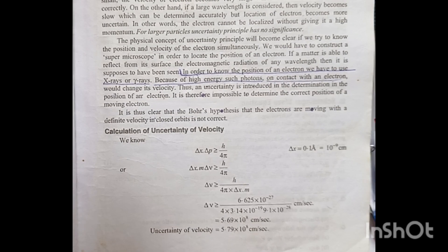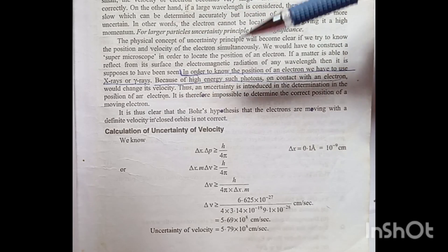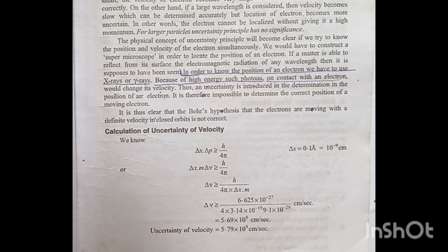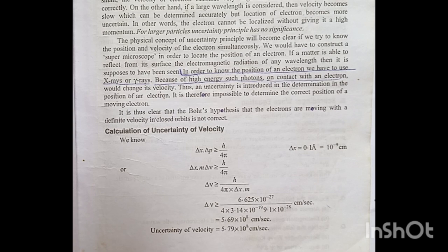If we need to know the position and velocity of an electron simultaneously, we need a super microscope to locate the position of an electron. If a matter is able to reflect electromagnetic radiation of any wavelength from its surface, it is supposed to have been seen. In order to know the position of an electron, we have to use X-rays and gamma rays. Because of the high energy of such photons, on contact with an electron they would change its velocity.